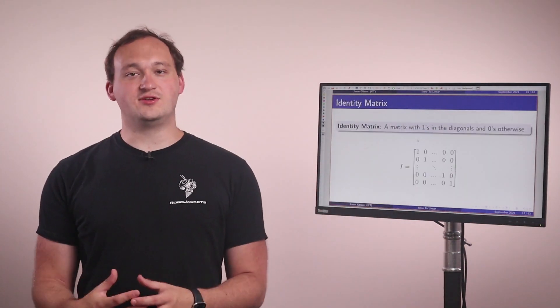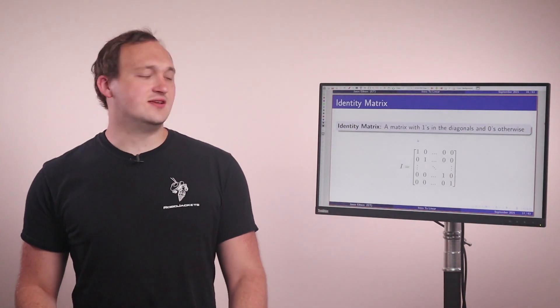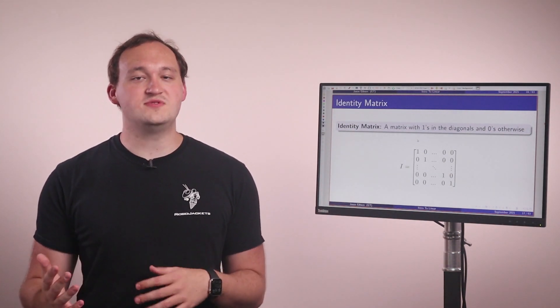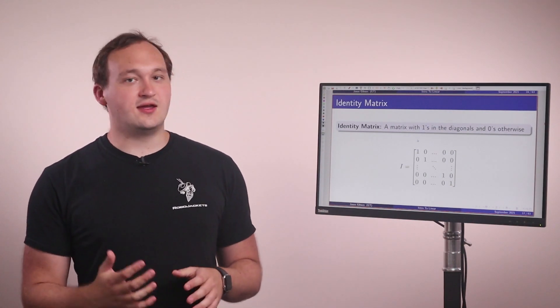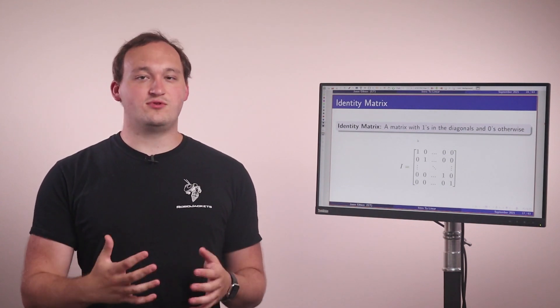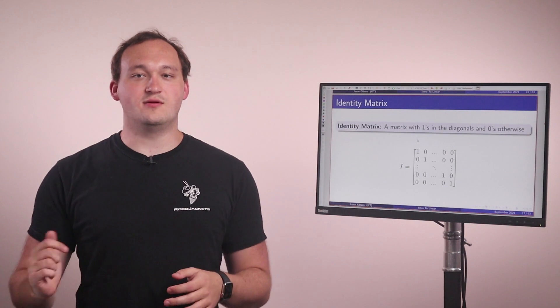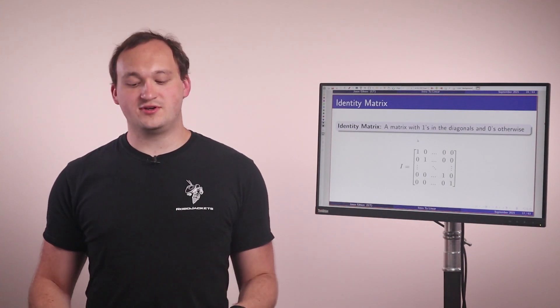So we have a really special matrix called the identity matrix. And the identity matrix is a matrix that can be of any dimensionality. So we can have any number of rows or columns, but the rows and columns must always be equal, must be a square matrix. And the value, the important property of this is similar to what we have, we have one in a scalar case. So one times any number is equal to that number. Any matrix times the identity matrix is equal to the original matrix.